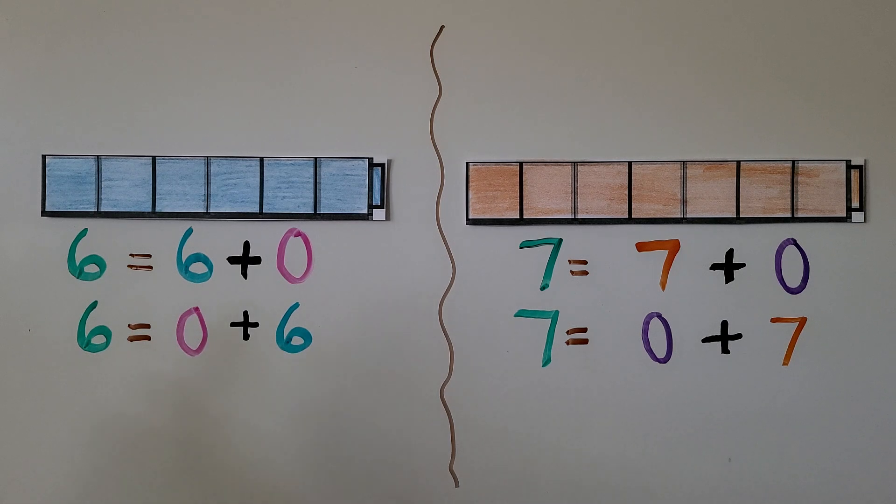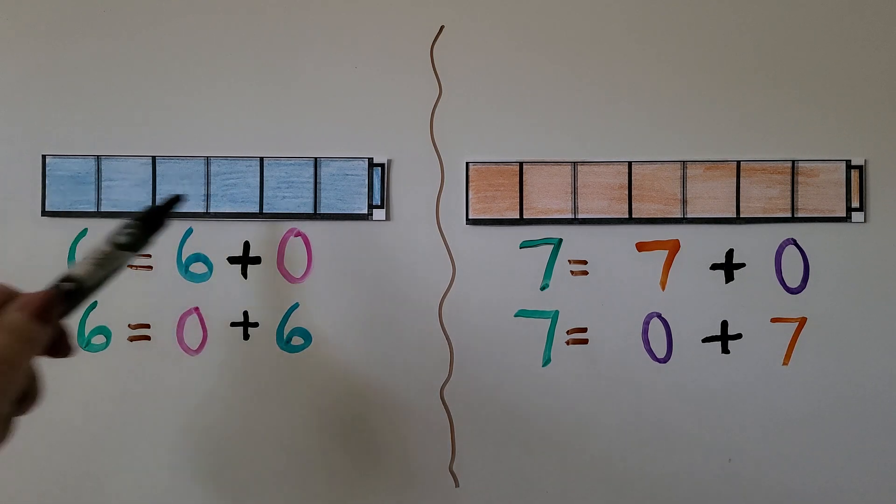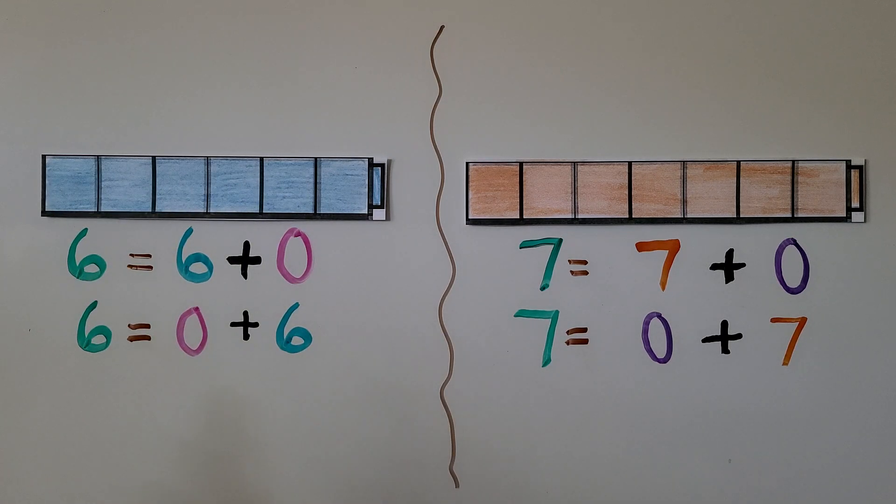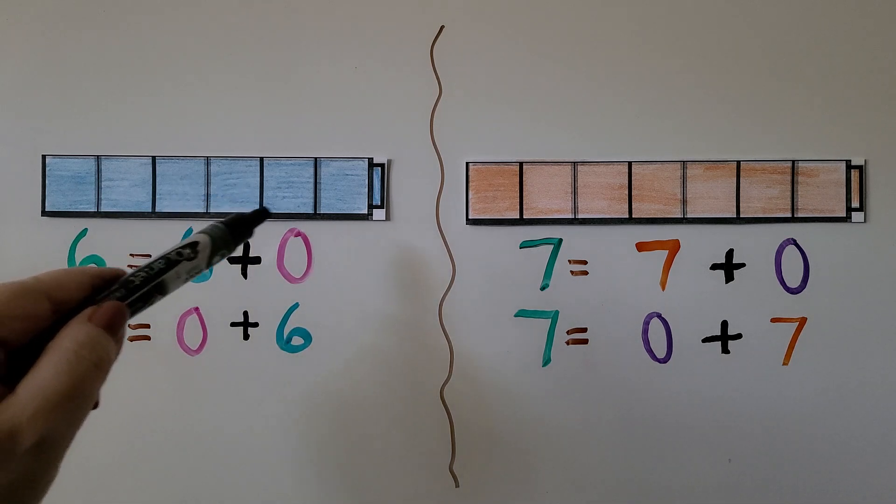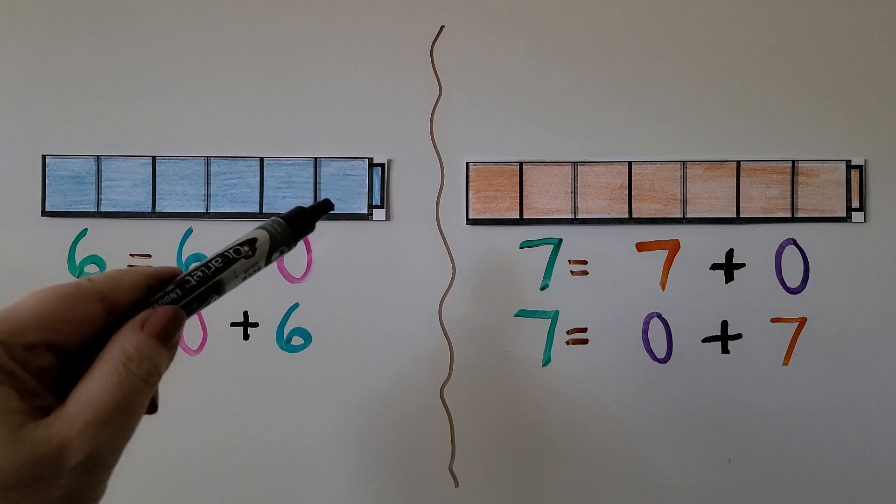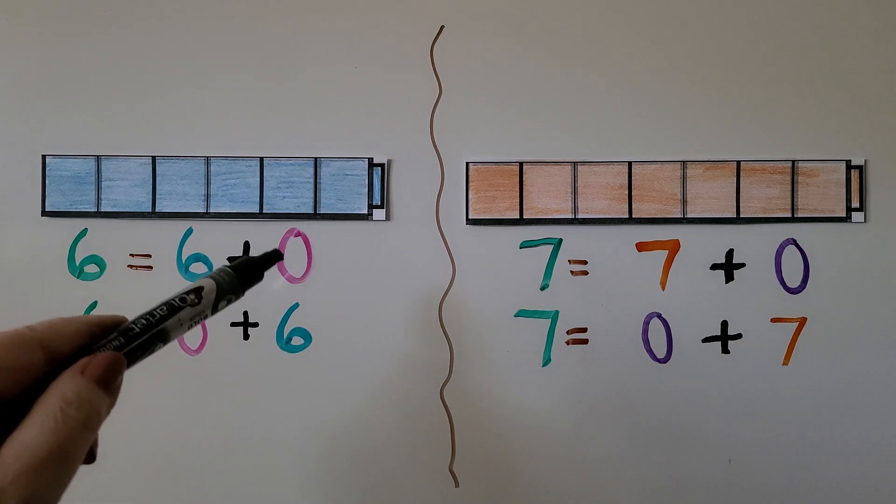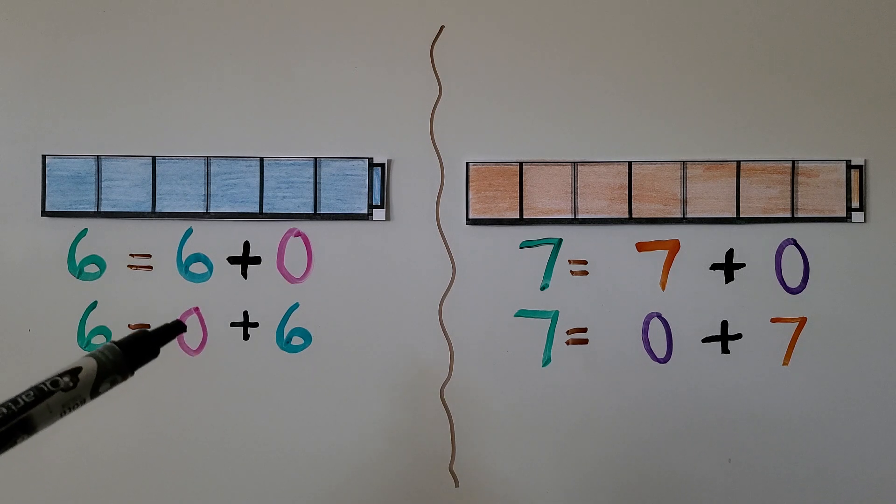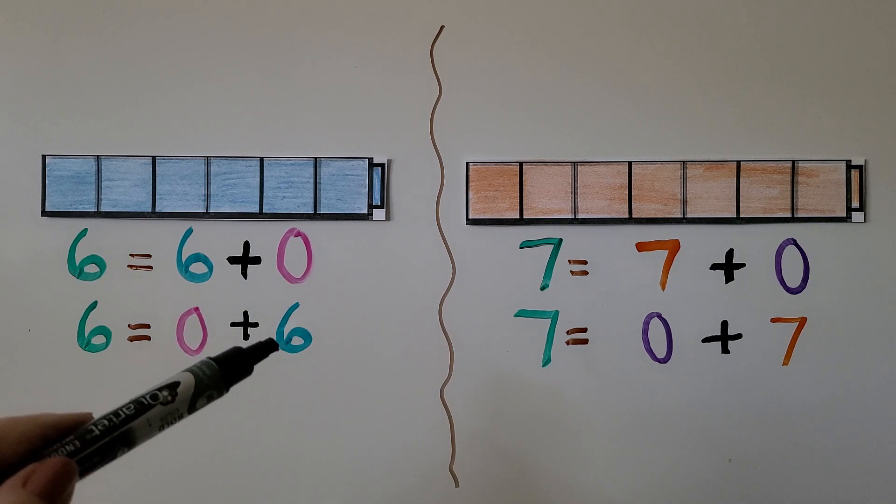We can show 6 as 6 blue and 0 pink cubes in the cube train. We have 1, 2, 3, 4, 5, 6 blue ones, and we don't have any pink ones. So we have 0 pink ones. We can also say 6 is equal to 0 pink ones plus 6 blue ones.